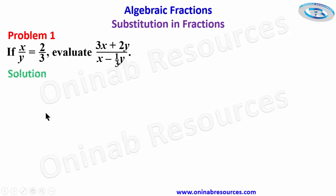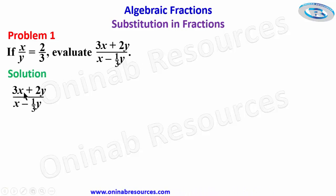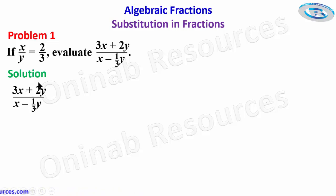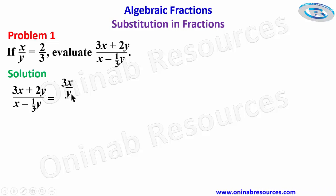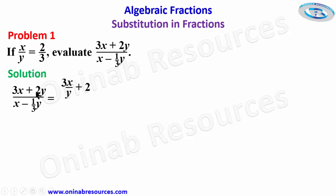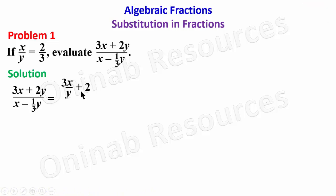In our solution, we are going to manipulate the expression to accommodate x over y. To do that, we divide every term in the expression by y, so that 3x divided by y gives us 3x over y, then plus 2, since 2y divided by y gives 2.